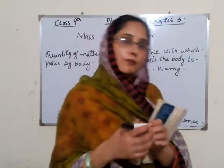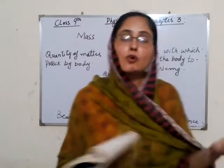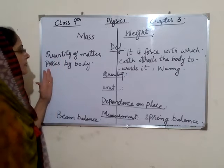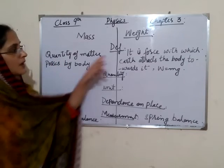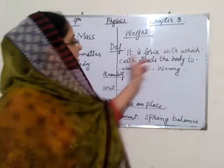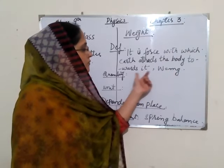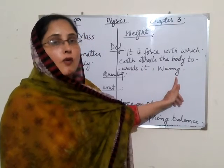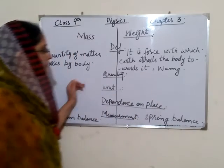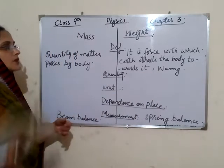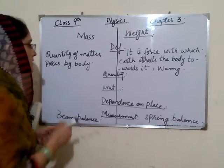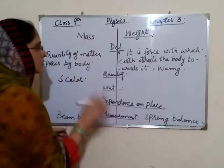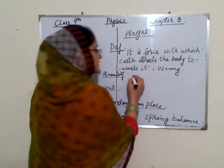Mass is the quantity of matter contained in a body. Weight is the force with which the Earth attracts the body towards it. The formula for weight is W equals mg.